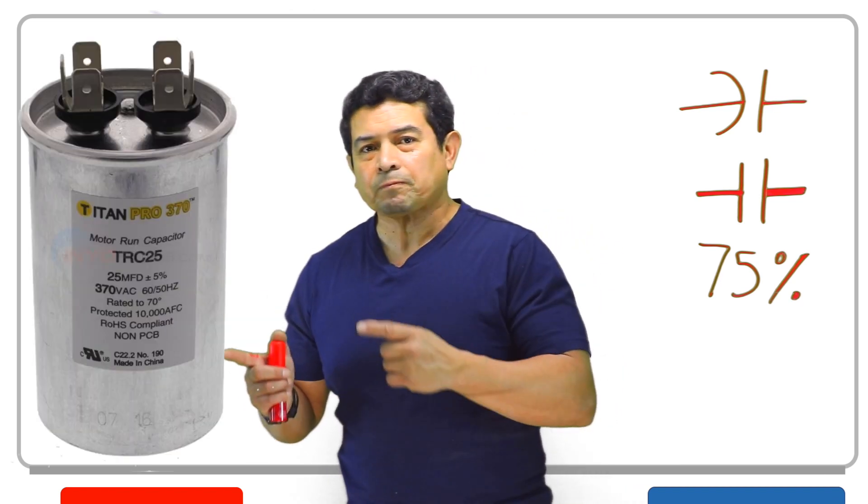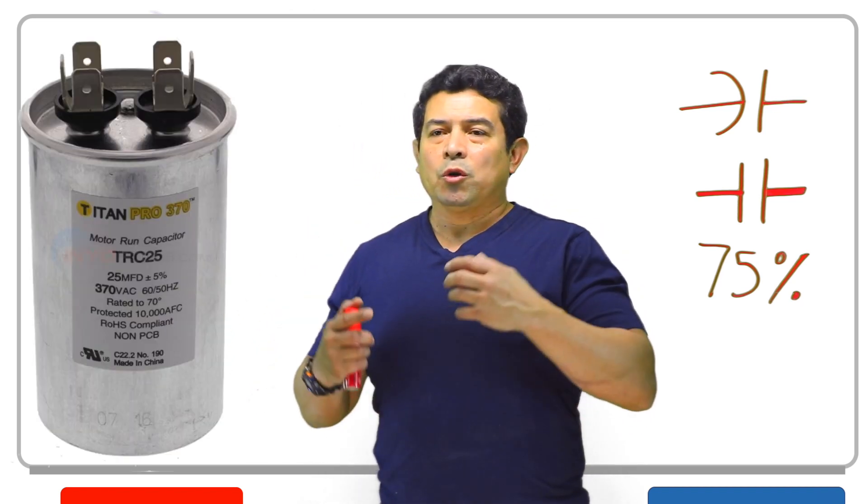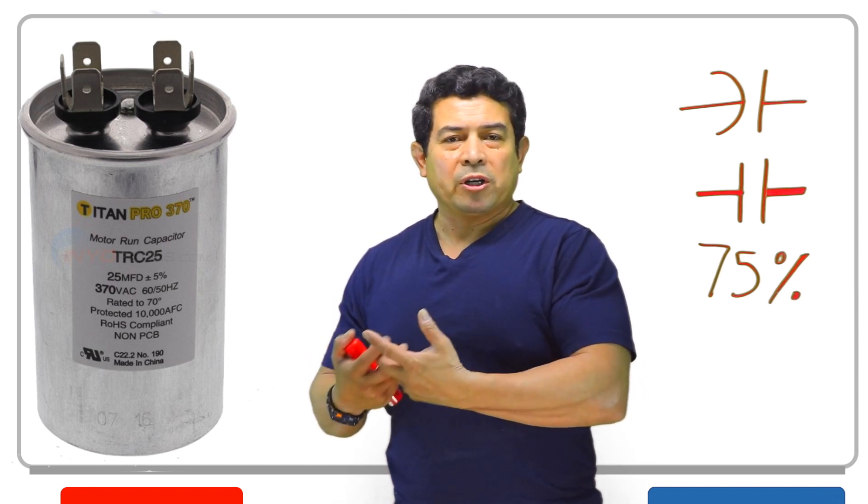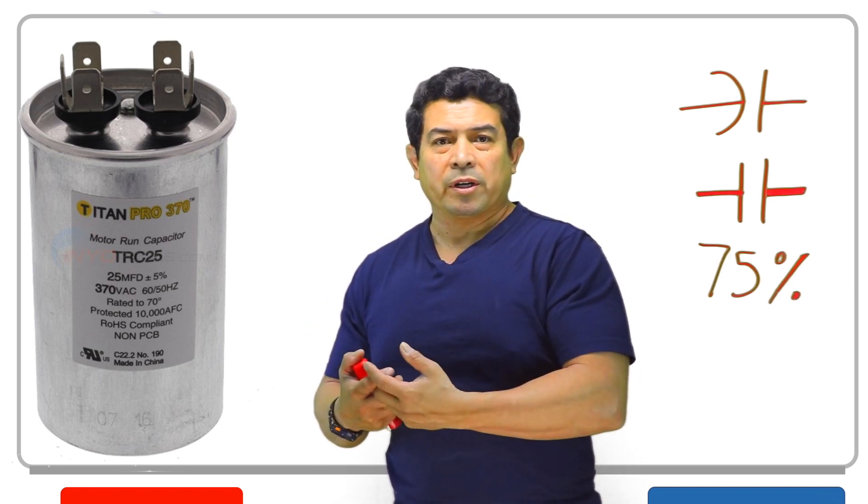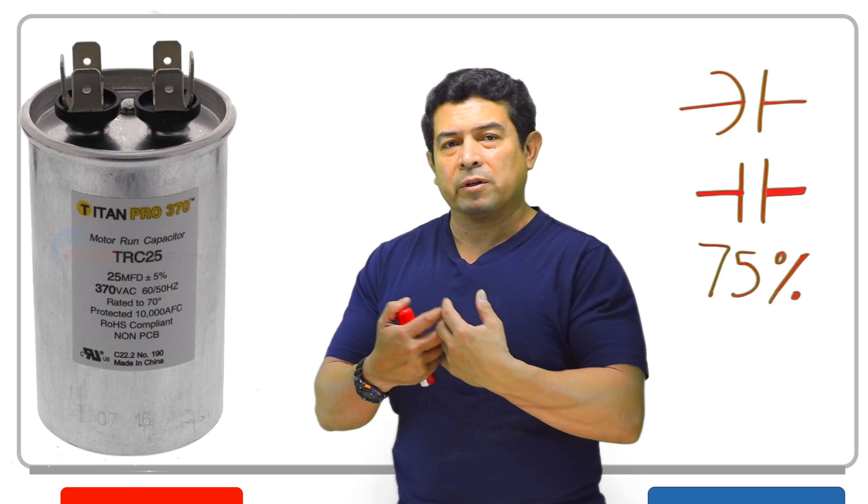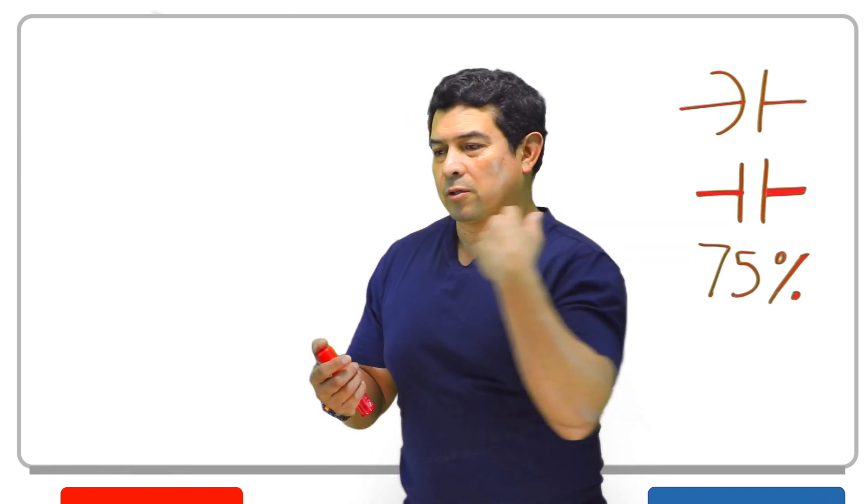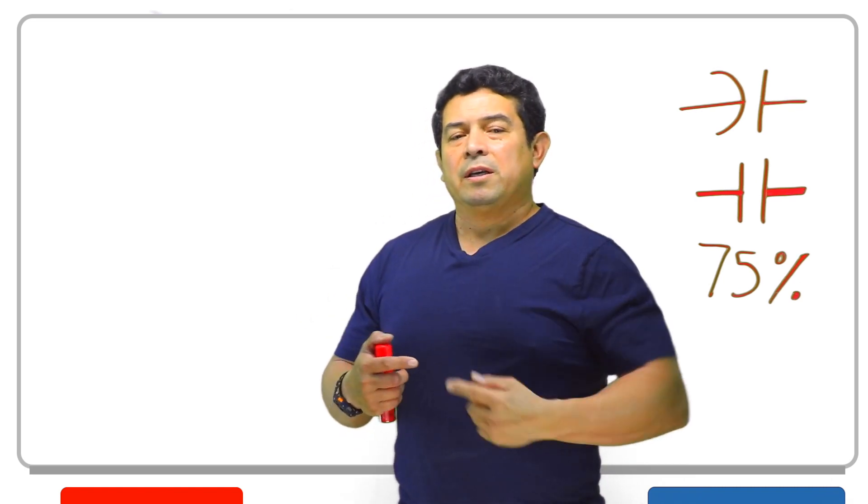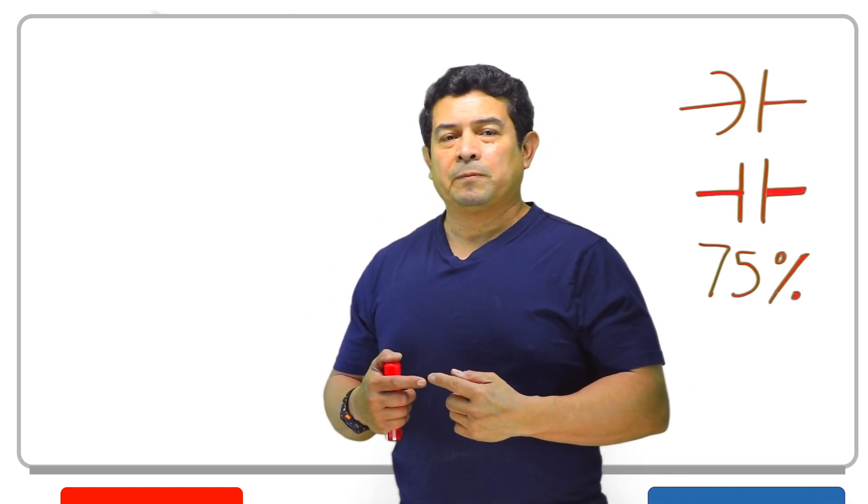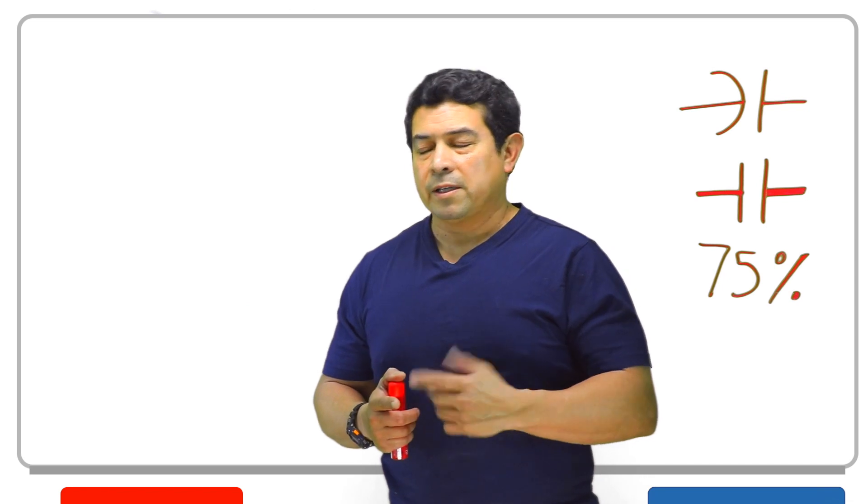The run capacitors, they're going to be used when the compressor or the motor is running, whether it's an evaporator motor, a condenser motor, compressor motor. On startup, it's going to get power instantly. And as long as it's running, it's going to be supplying power to the device.